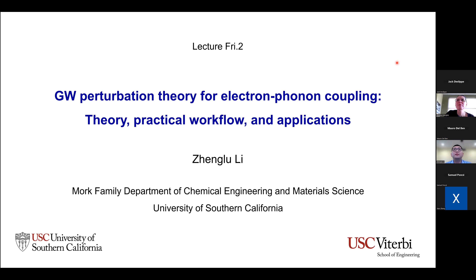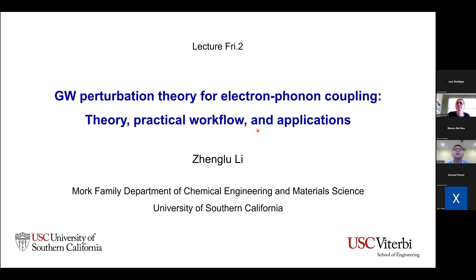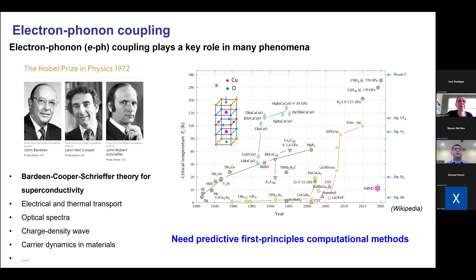I'll be talking about GW perturbation theory, particularly for electron-phonon coupling. We've heard about electron-phonon coupling mainly using DFPT in the first three days, and about GW calculations yesterday and from Jack's talk this morning. The question is: can we, and how do we, make GW corrections to the electron-phonon matrix elements?